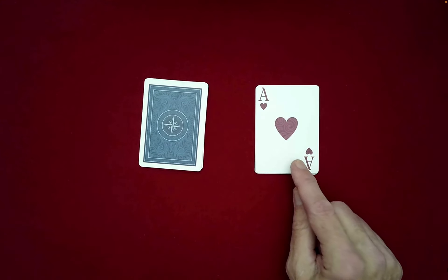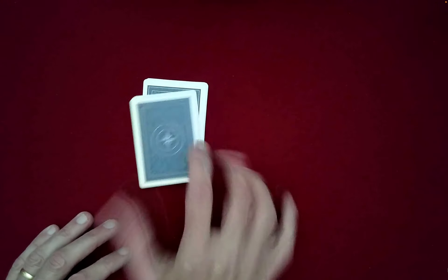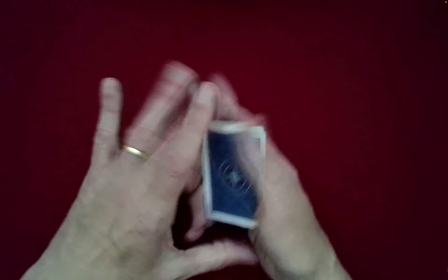We'll be looking for its companion, which is the Ace of Diamonds. You take this packet and just set it on top of the other one.